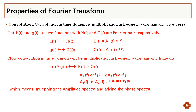Convolution in the time domain is multiplication in the frequency domain, and vice versa. If h(t) and g(t) are two functions with Fourier representations H(f) and G(f), then convolving h(t) with g(t) corresponds to multiplication in the frequency domain — you multiply the amplitude spectra and add the phase spectra. Convolution will be studied in detail in the next lecture.